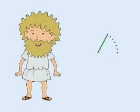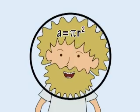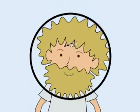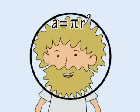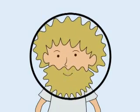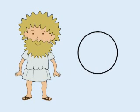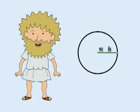A circle's all the points in a plane, whose distance from a central point's the same. And pi r squared, pi r squared, is the area inside there. The distance from the center to the perimeter is called the radius, or simply r.